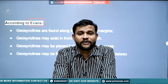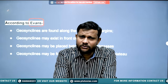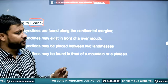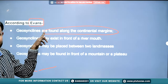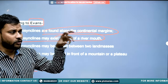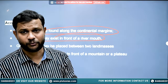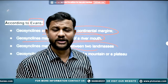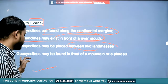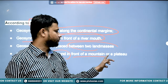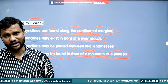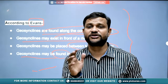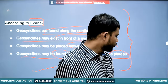According to Evans, geosynclines have variable positions: they can form along the continental margins, near river mouths where rivers deposit sediment, between two land masses such as Eurasia and the Indo-Australian plate or Africa and the Eurasian region, and also in front of a mountain or a plateau region. So geosynclines have differential location and position.